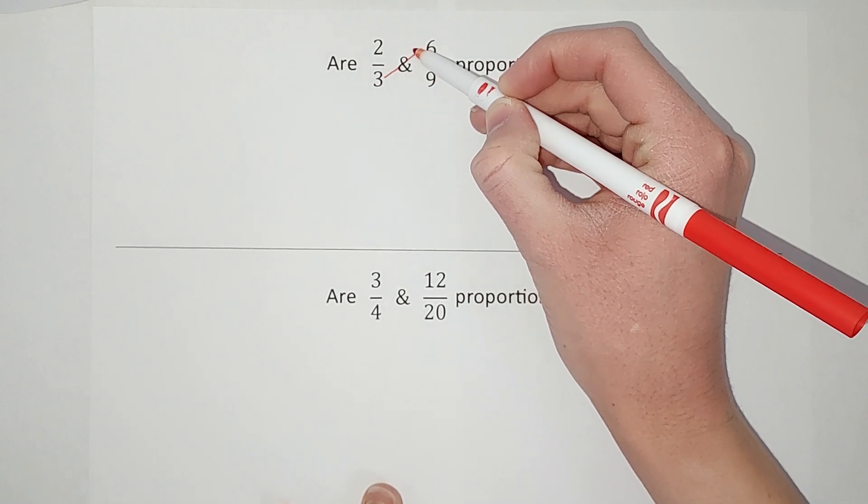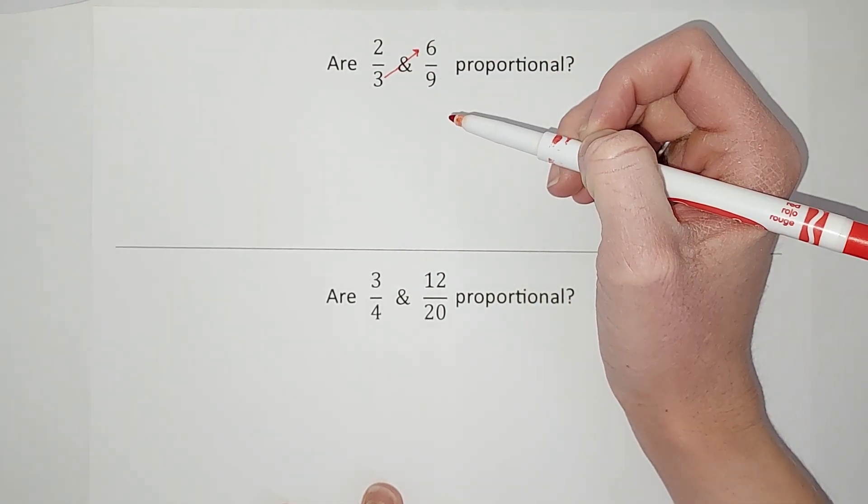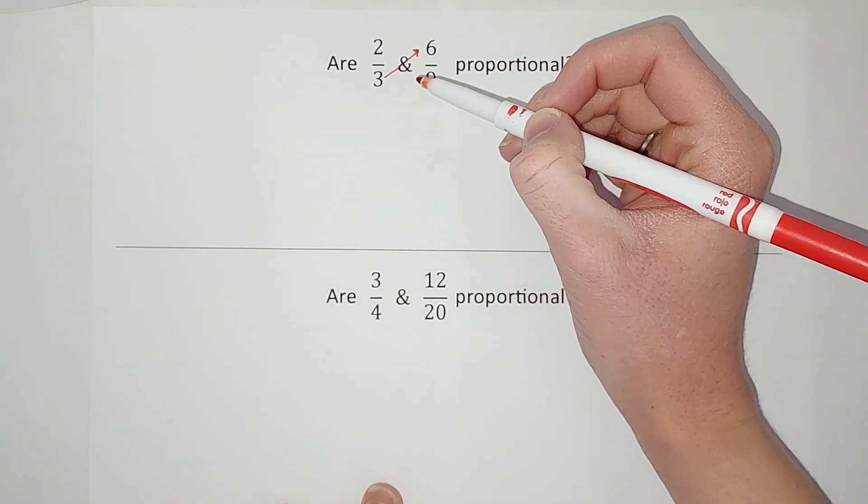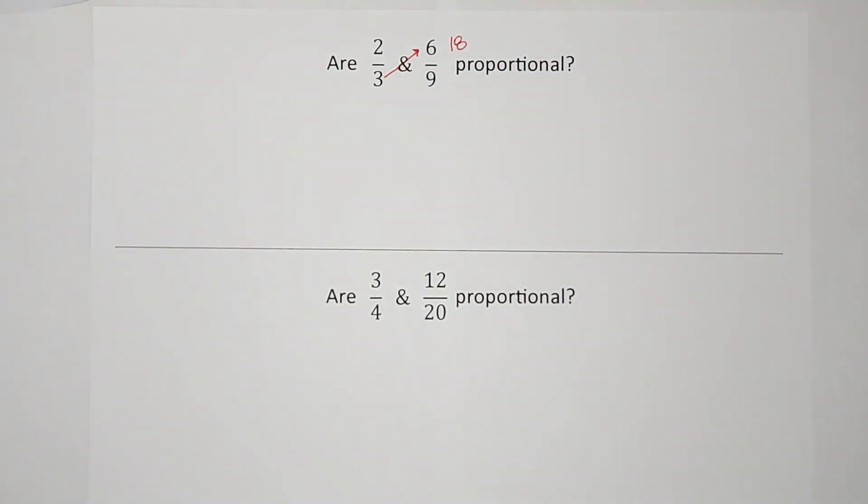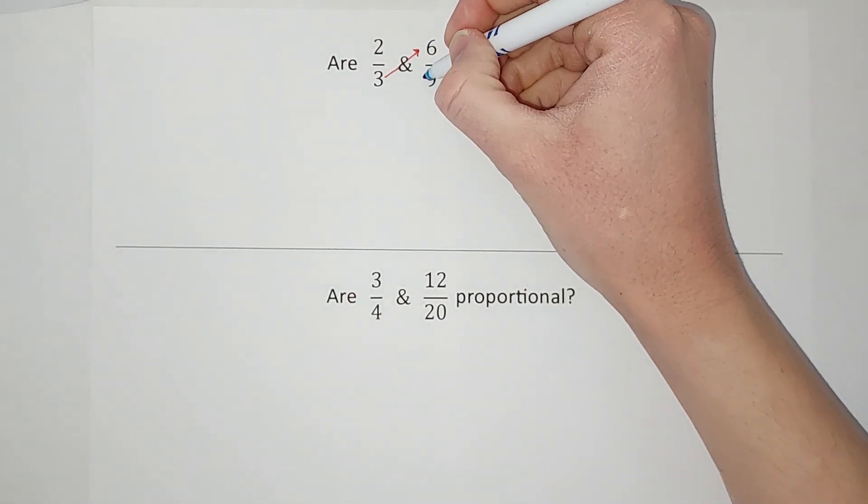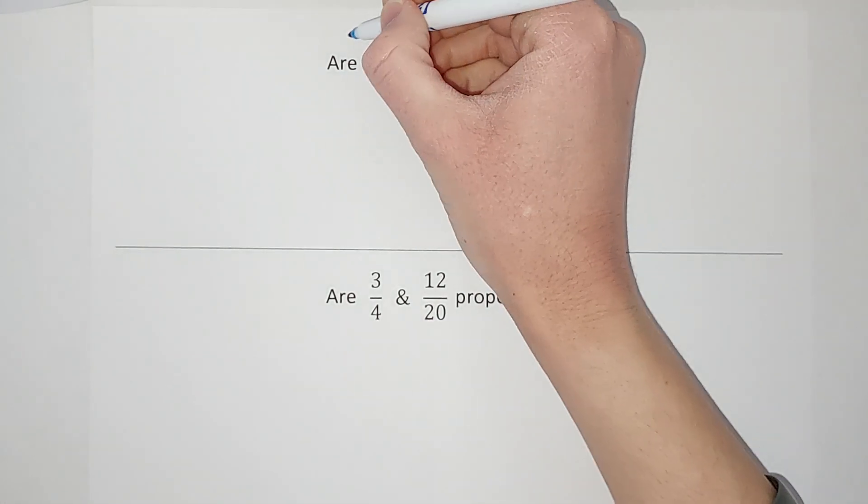So 3 times 6 gives me 18. Then we're going to multiply the other way, so we're going to go from this denominator to the other numerator and we get 18.